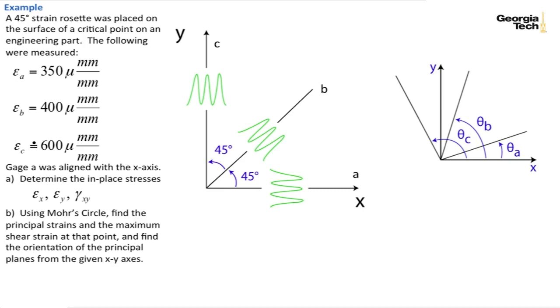Okay, so to start off with, for a 45-degree rosette, theta_a is going to be 0 degrees because it's aligned with the x-axis. Theta_b is going to be 45 degrees, and theta_c is going to be 90 degrees.